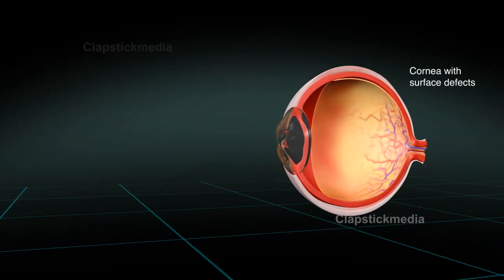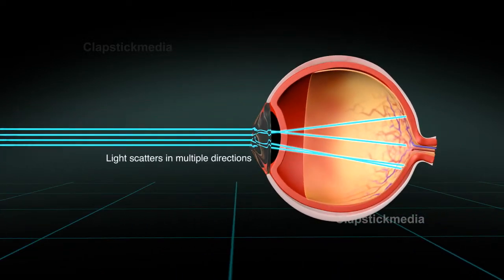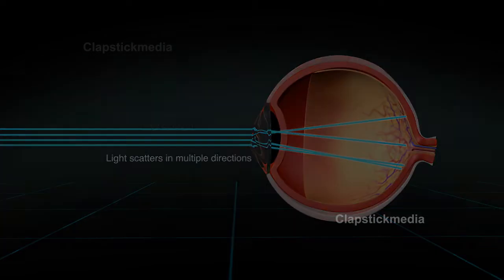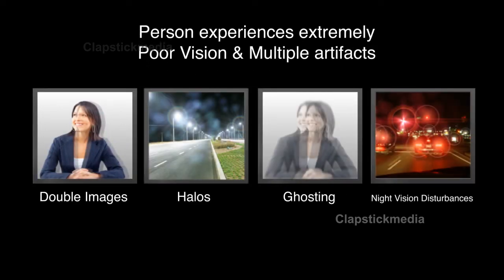When this occurs, instead of the cornea having an ideal curve, it now has multiple focal points with light waves scattering in multiple directions, leaving a person with extremely poor vision and multiple artifacts such as double images, halos, ghosting, and night vision disturbances.